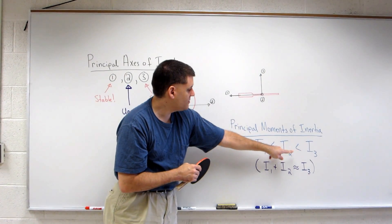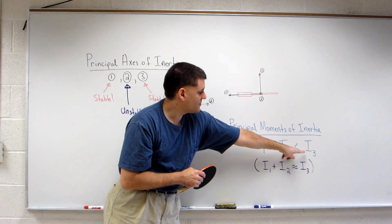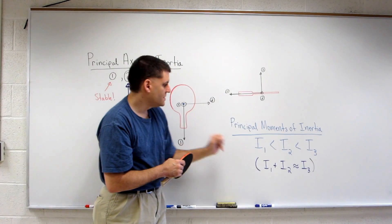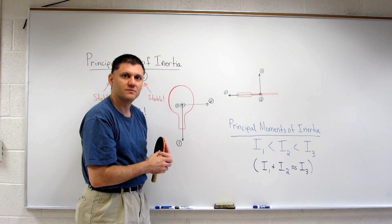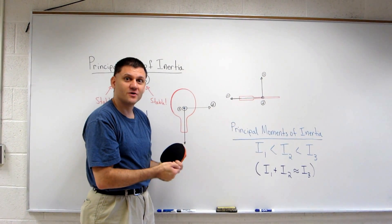But in general, if you can order moments of inertia like this, the first and the third axis here lead to stable rotations. The intermediate, in our case the second axis, is an unstable rotation. You should try this at home with your remote control.